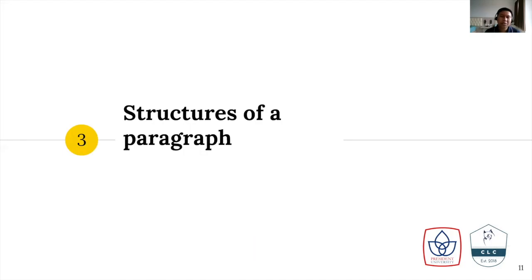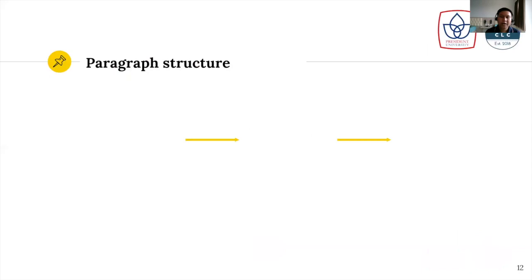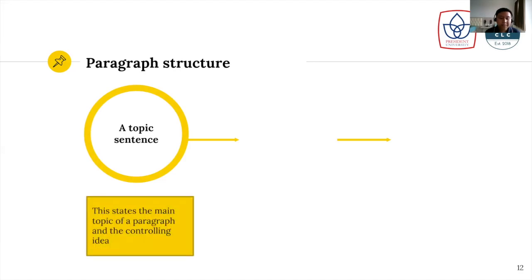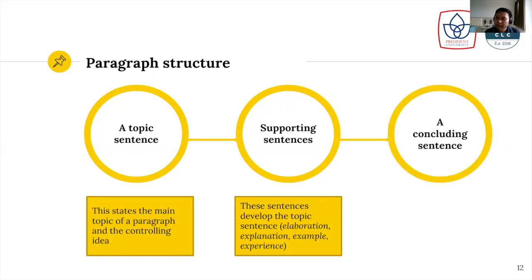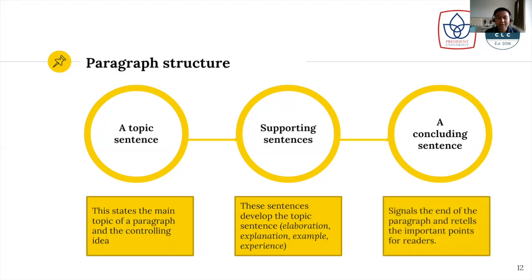Let's talk about the elements or structures of a paragraph. There are basically three structures of a paragraph. First of all, it contains a topic sentence, which states the main topic of a paragraph and the controlling idea — remember, one main idea in one paragraph. Then supporting sentences develop the topic sentence by giving elaboration, explanation, example, and experience as well. I will talk further about this in the third writing series video. And then a concluding sentence basically signals the end of the paragraph and retells the important points for the readers. So remember: a topic sentence, supporting sentences, and then a concluding sentence.